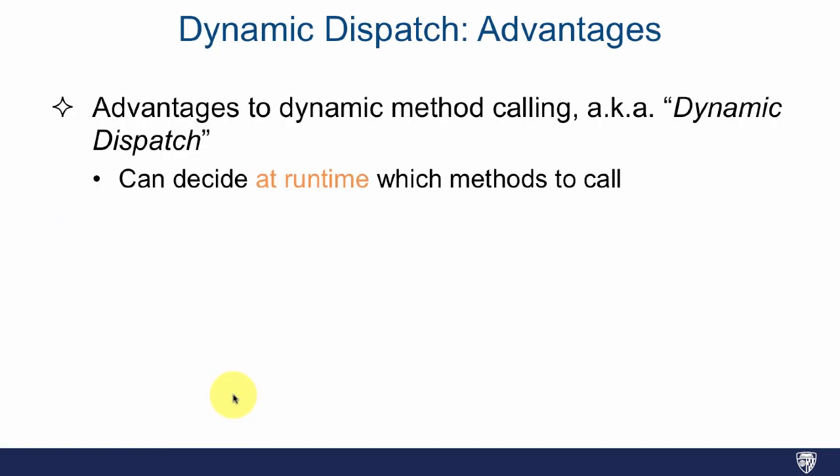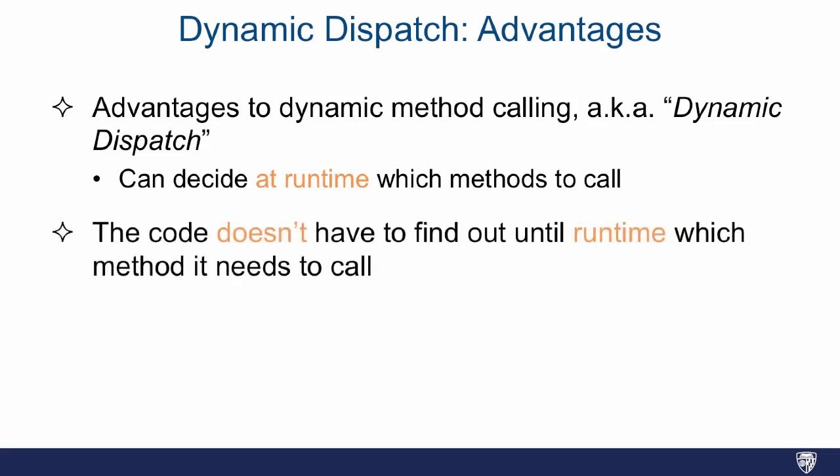So this approach is called dynamic dispatch. You're dynamically dispatching based on what the string or symbol is, that could be a variable that you get. And basically it means that you could decide at runtime which methods to call. You don't have to have dog.bark; you could have dog and then decide at runtime maybe it's going to bark, maybe it's going to jump depending on some other condition, and the code doesn't have to find out until runtime which method it needs to call.